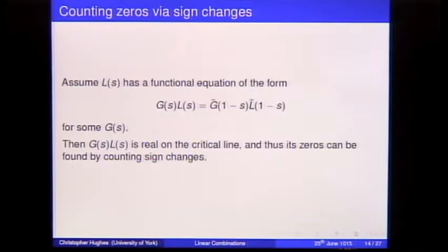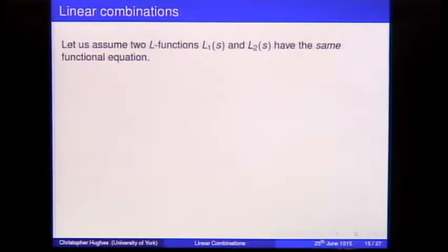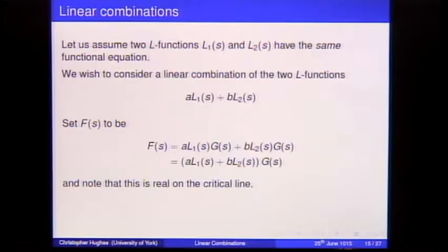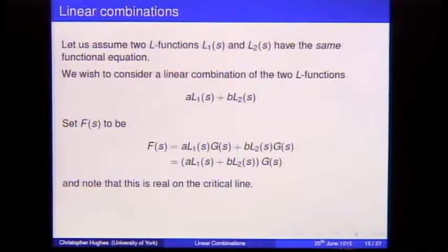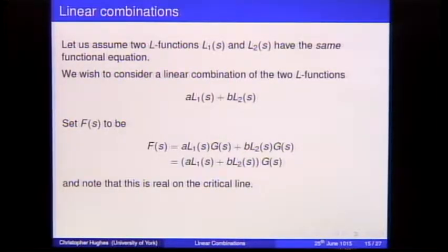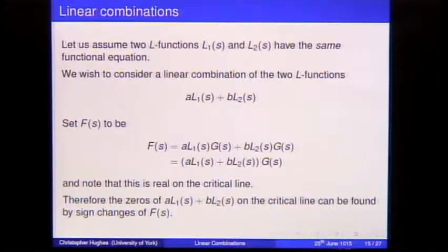If two L-functions L₁ and L₂ have the same functional equation — the same G — then any linear combination A·L₁ + B·L₂ (with A, B real), multiplied by G, gives a function F that is real along the critical line. So I can count zeros of the linear combination by counting sign changes of F. I couldn't do this if they didn't share the same functional equation.